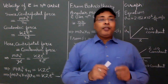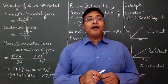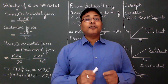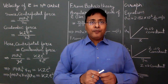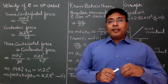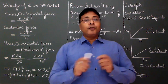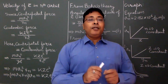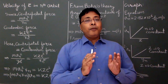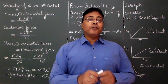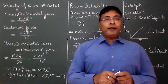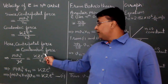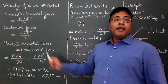The Coulombic force will be kze² upon rn². Since this Coulombic force is responsible for circular motion, the magnitude of the Coulombic force equals the magnitude of the centripetal force: m·vn² upon rn = kze² upon rn².